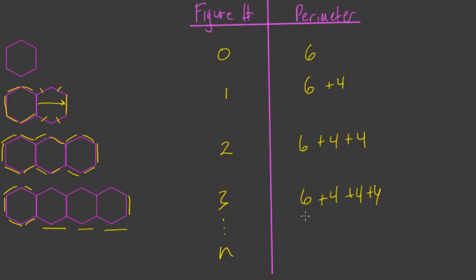So if we go to the nth figure, what would we have? Well, we always start with 6, and then look, for the third figure, we add 3 fours. For the second figure, we add 2 fours, and for the first figure, we add 1 four. So we always add n fours, or 4n. And that's the same formula we got before, just written in a different way. And this equals perimeter.